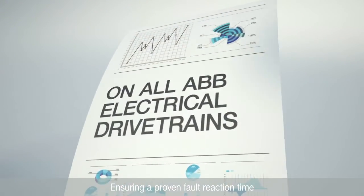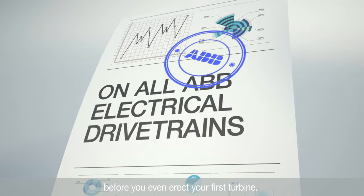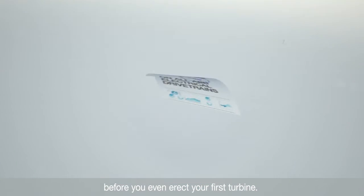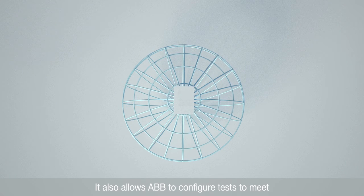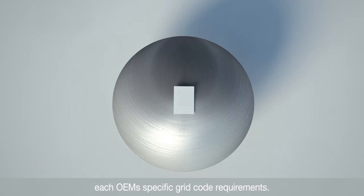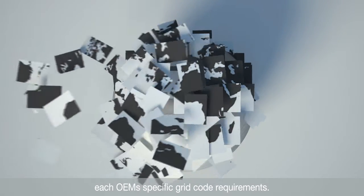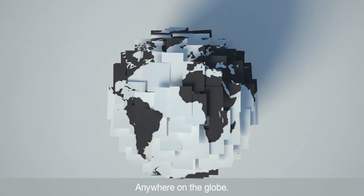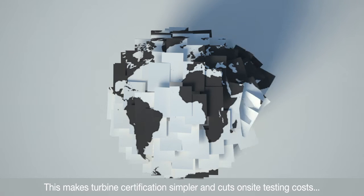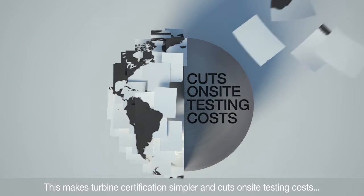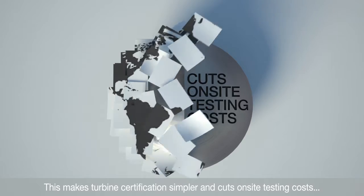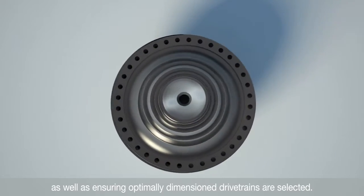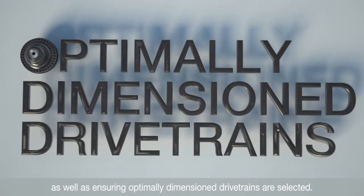Ensuring a proven fault reaction time before you even erect your first turbine. It also allows ABB to configure tests to meet each OEM's specific grid code requirements anywhere on the globe. This makes turbine certification simpler and cuts on-site testing costs, as well as ensuring optimally dimensioned drivetrains are selected.